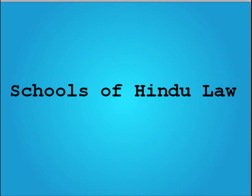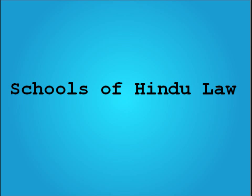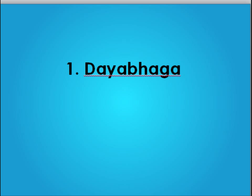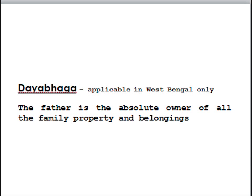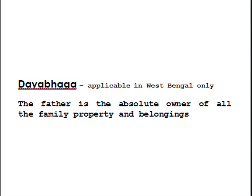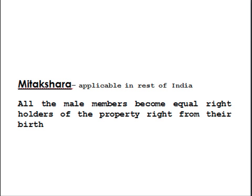There are two schools of Hindu law as per HUF. One is Dayabhaga, and two is Mitakshara. Dayabhaga is applicable only in the state of West Bengal. As per this law, the father — that is, the common ancestor — is the absolute owner of all belongings and property. On the contrary, in Mitakshara, which is applicable in the rest of India, all the male members become equal right holders of the family property right from their birth.